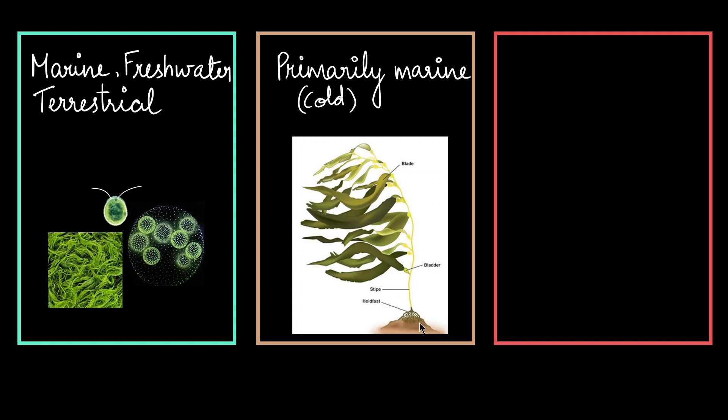They are attached to the ocean floor by this holdfast which resembles a root. The stem is in the form of a stipe, so it's more of a flexible stem-like structure that they have, and these broad leaves are called as the fronds.